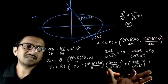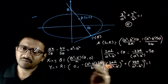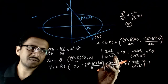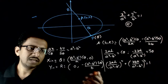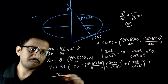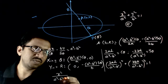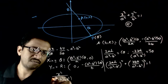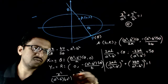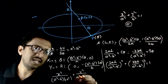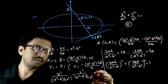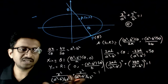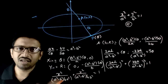This is the condition on h, k. To get the locus, substitute h with x and k with y. So the equation of the locus is: x² / [(a² - b²)²/4a²] + y² / [(a² - b²)²/4b²] = 1. This is the equation of the locus.